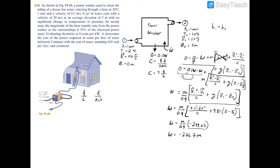Now let's look at units. We're looking for cents per liter, and we're given cents per kilowatt hour. To convert, we need kilowatt hours per liter as an intermediate unit. So I'll divide both sides by volume, which converts mass flow rate divided by volume into density, giving us power per unit volume equals negative 276.7 times the density.